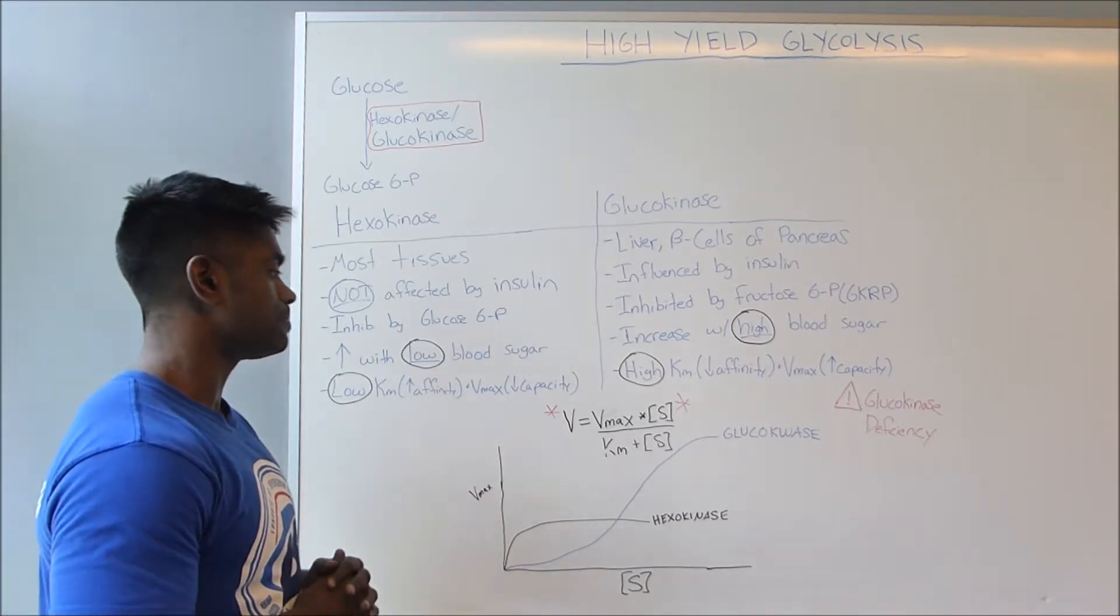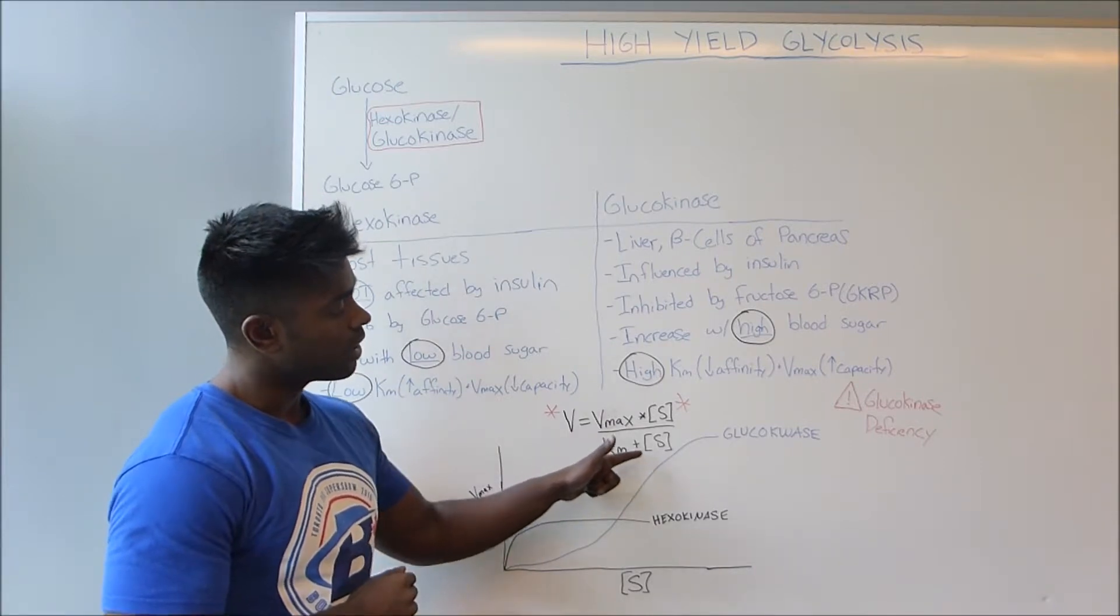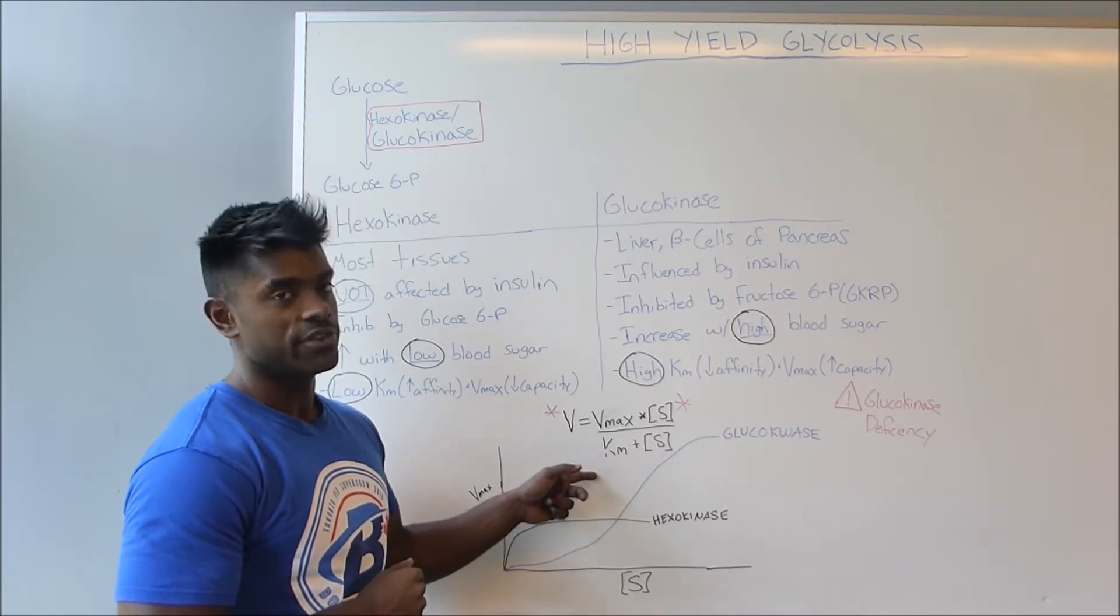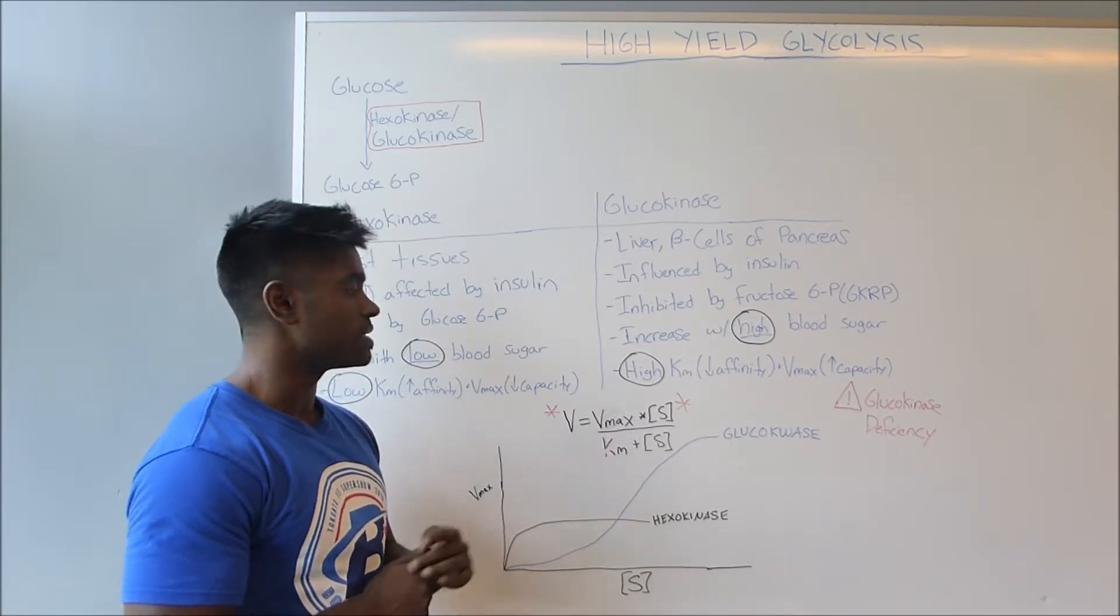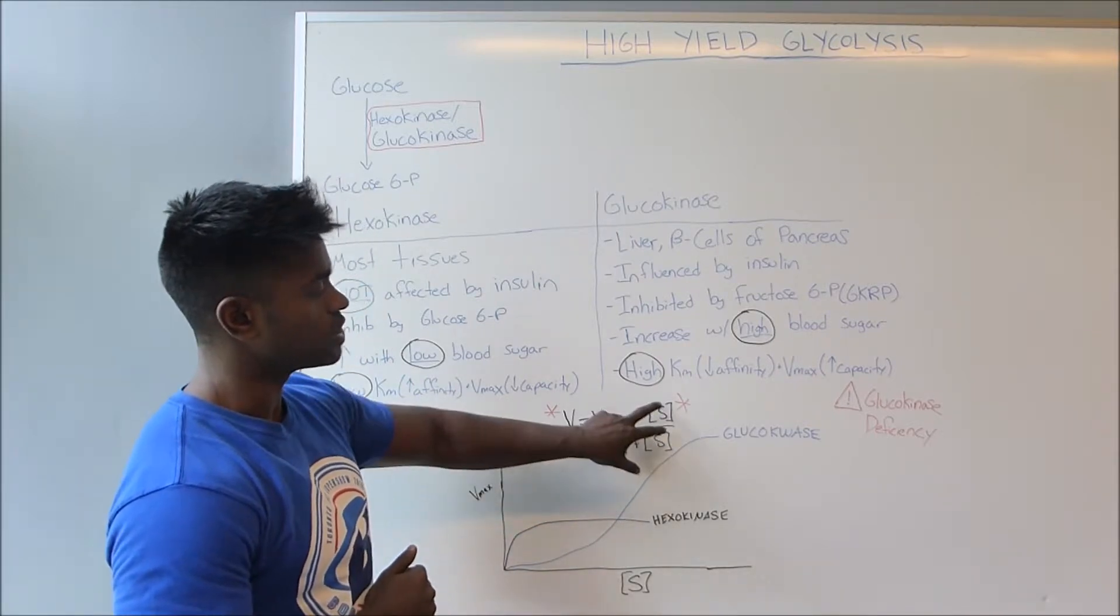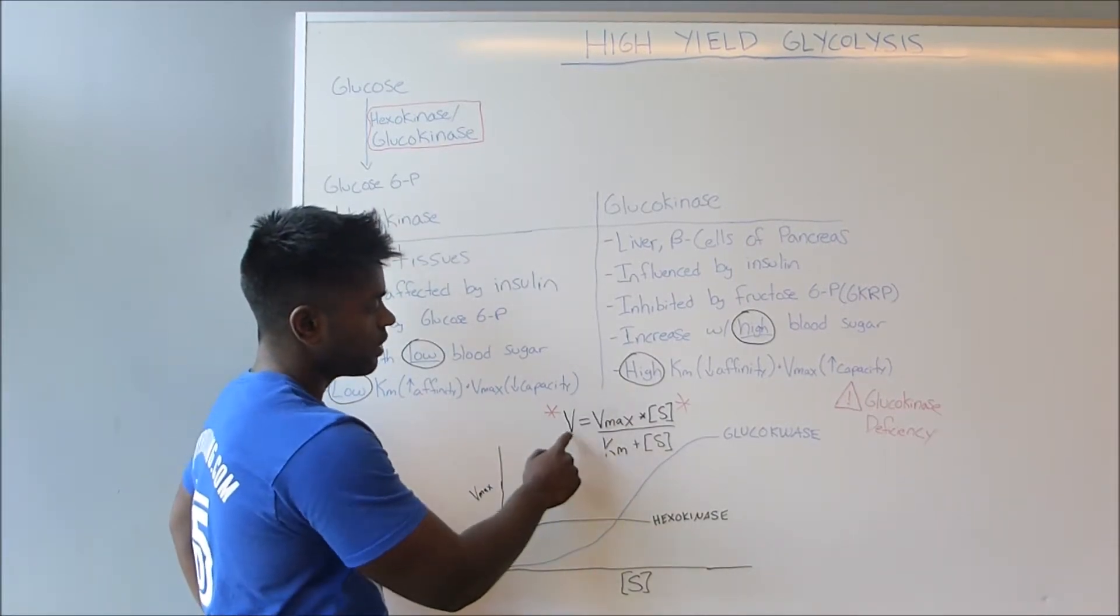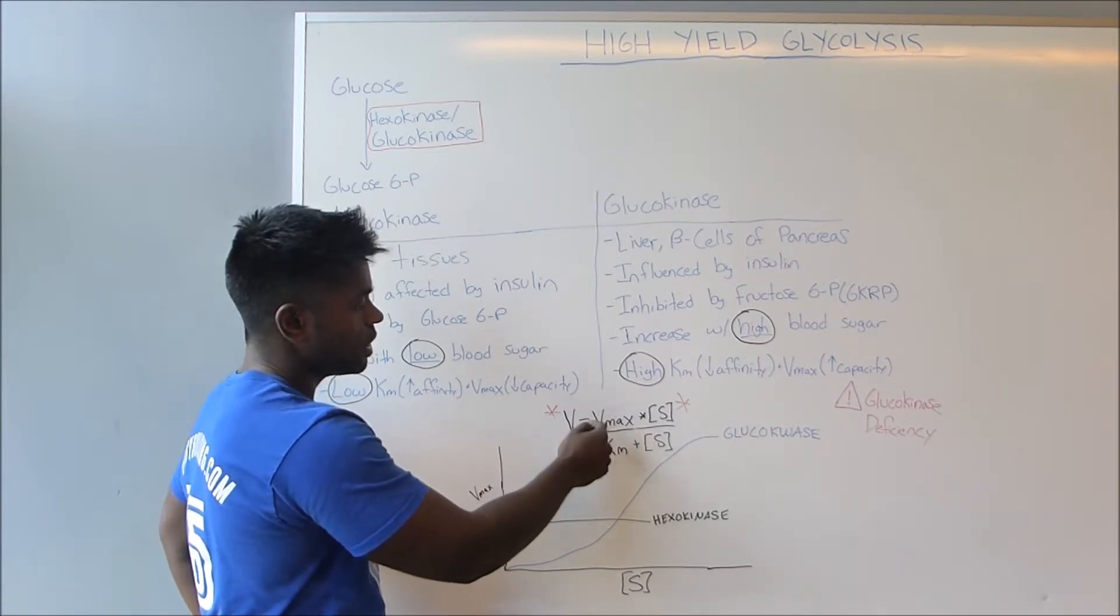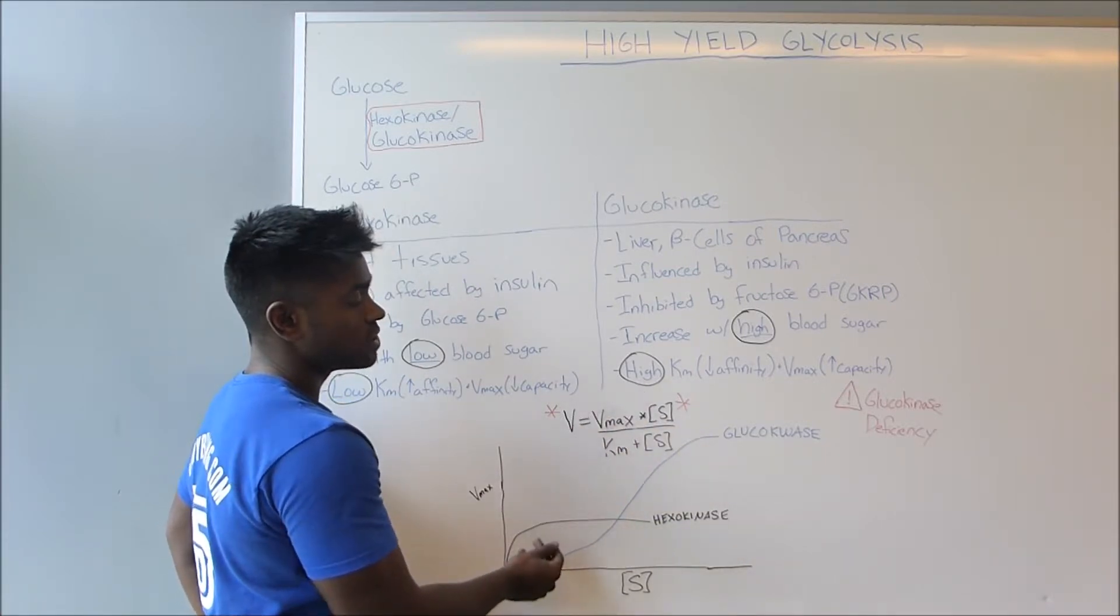Now, if we have a very low Km, it's going to take a small amount of substrate concentration to make the Km seem insignificant. Therefore, if when the Km cancels out because the substrate is slightly larger, then these two substrates will cancel out as well. So then you're going to be left with V equals Vmax. So right now we can see that V will equal the Vmax at quite a small amount of substrate because the Km is so small as well.